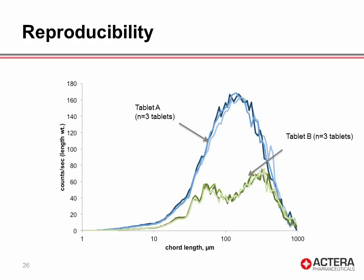This next slide shows the reproducibility of the FBRM characterization technique. Two different tablet samples produced by two different manufacturers are compared at the end of the disintegration test, measured in triplicate. The FBRM is able to clearly show distinguishing features between each tablet. Performing this test in triplicate shows a great deal of reproducibility — the distributions are essentially superimposable at each characterization.